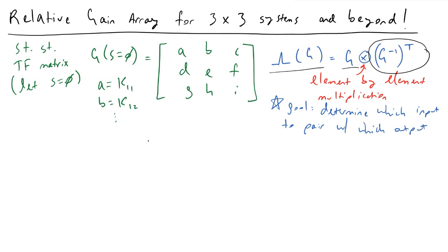For the sake of this example, we're going to work through this full problem in which I have a steady-state gain array. I'm going to abbreviate my notation, substituting A, B, C, and so on for my steady-state gain values. So A is really equivalent to K11, B is equivalent to K12, and so forth. To reiterate the goal: this process will determine which inputs pair with which outputs in order to ensure the best performance of our system.